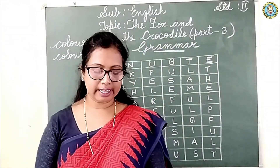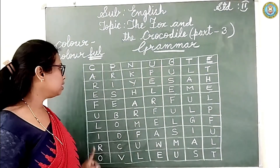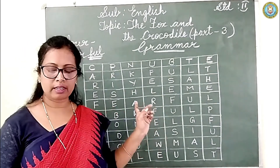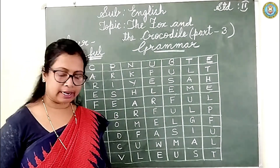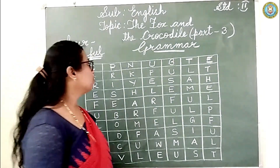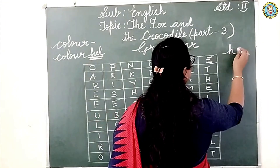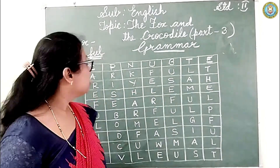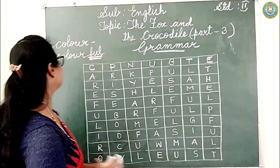Now look at the board, children. Here is given a grid. Find the words given below in the grid and mark them as shown in the example. The first word you have to find is 'helpful' — H-E-L-P-F-U-L.